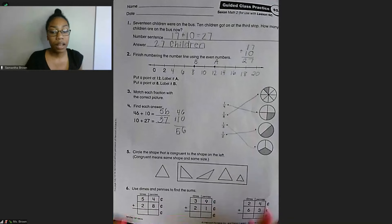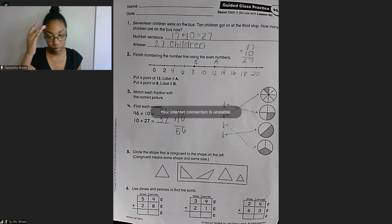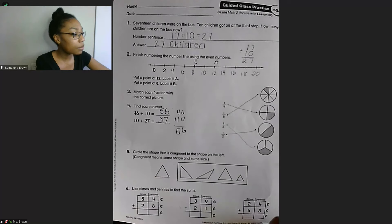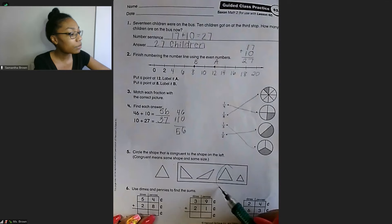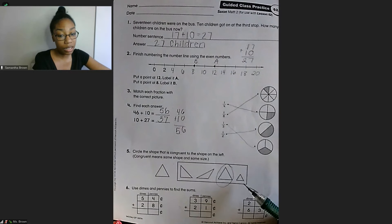All right, number 5 talks about, it says, circle the shape that is congruent to the shape on the left. So congruent means same shape and same size. So what I will be looking here for here is a shape that is the same size as our shape here. And it's the same shape. So it's not like tilted or like slanted in any way. We want it to be the same shape. So from what I see, it would be this one. And then this one, for example, has the same shape, but it's not the same size.